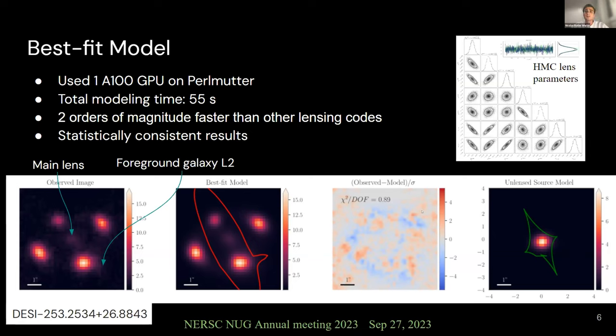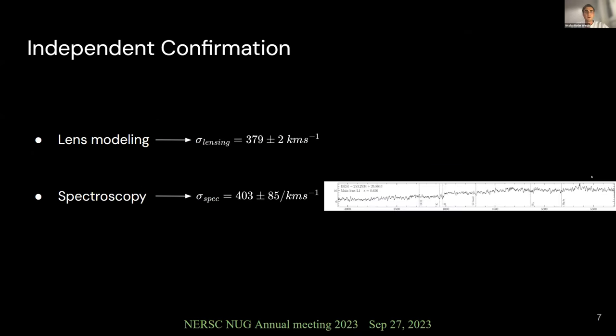At the top right corner, we demonstrate consistency between the chains obtained in sampling using Hamiltonian Monte Carlo. For the velocity dispersion, which gives information about how massive these lenses are, we have independent calculations. Using lensing information, we estimate the velocity to be around 379 kilometers per second. And from spectral effects due to stellar motion, we estimate it to be around 400 kilometers per second. Both results are independent and consistent.